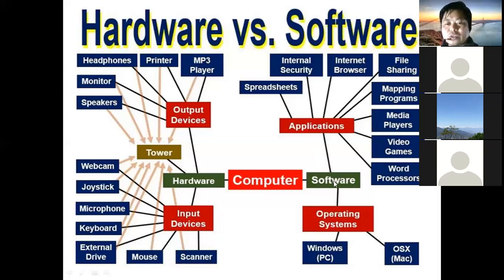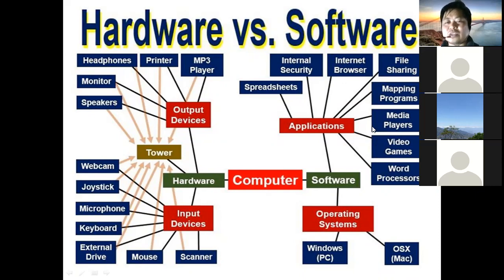And there is an operating system in the software. For example, there is Windows PC or Mac. There is also the application layer — internet browser, file sharing — there are a lot of applications. So you see, these are the different softwares.